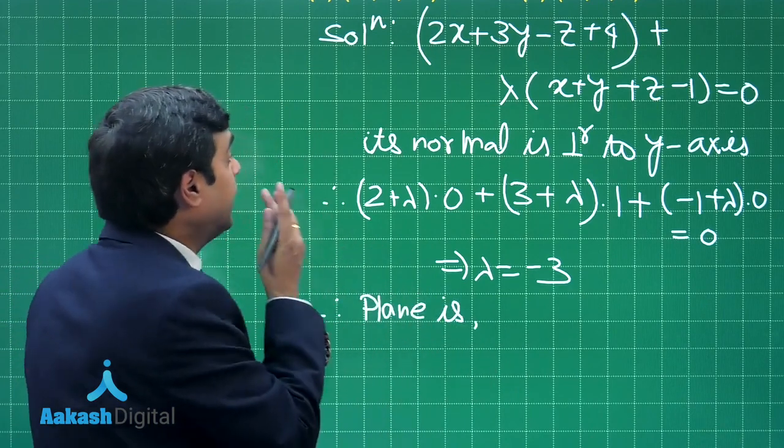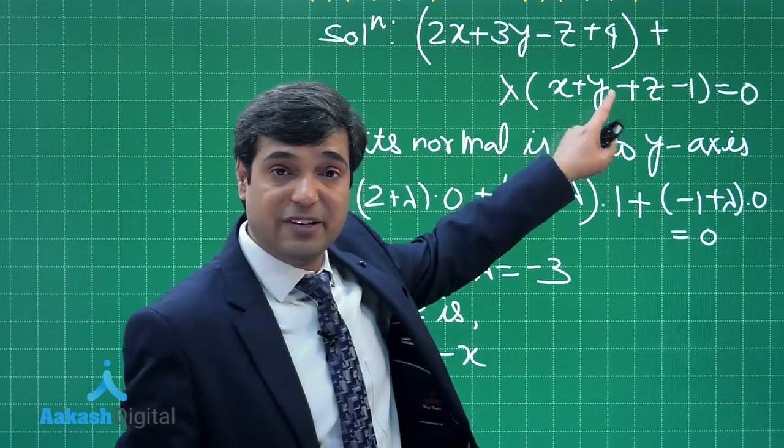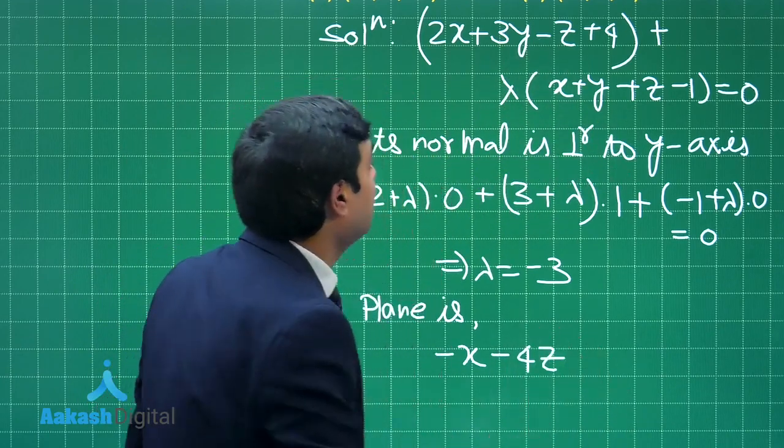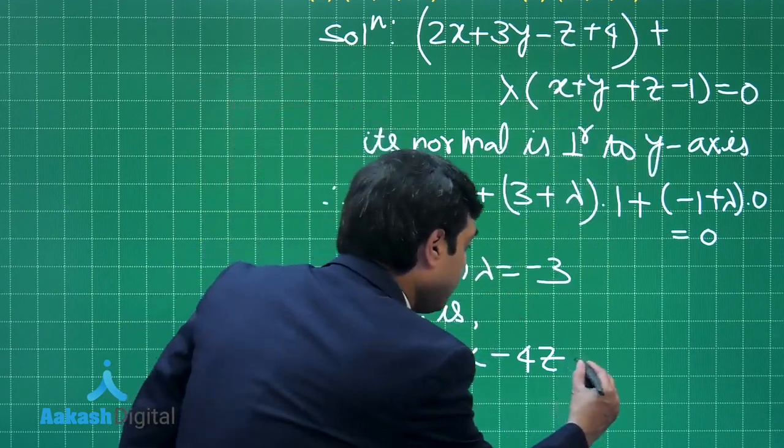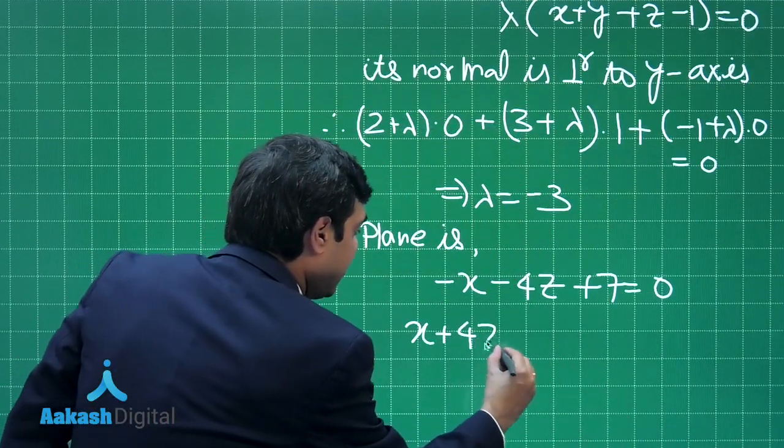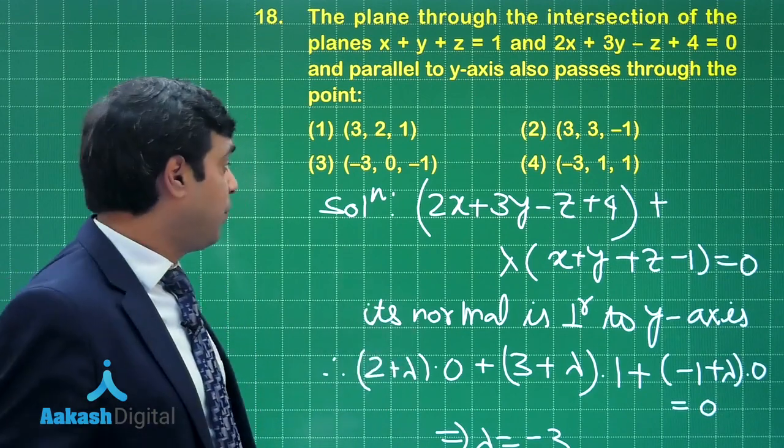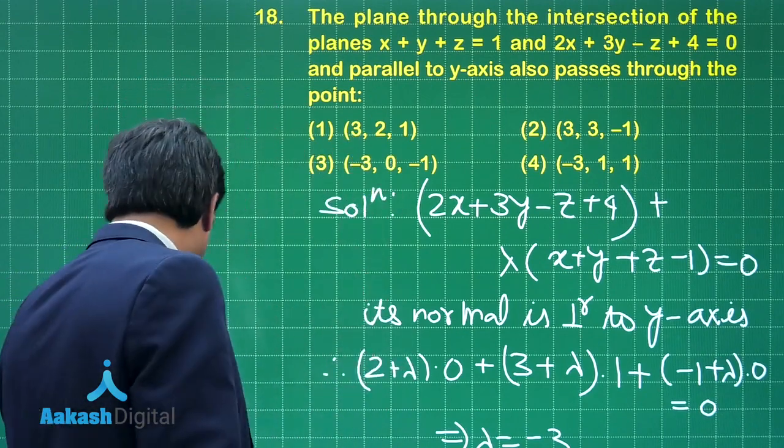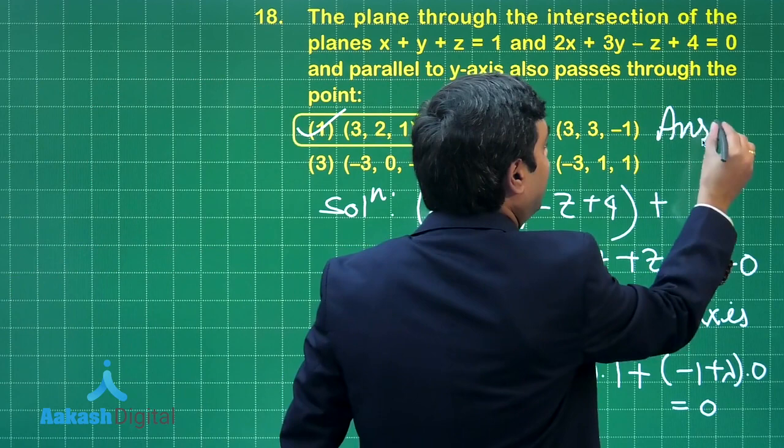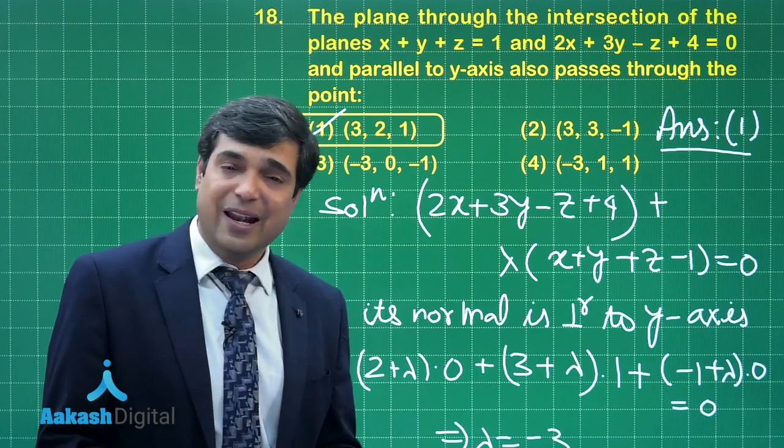Therefore, the plane equation: substituting λ=-3, we get 2x-3x, 3y-3y cancelled, -z-3z making -4z, plus 4+3 giving plus 7 equals 0. We can rewrite it as x+4z=7. Now look at the given options. x+4z, y can be anything, but x and z are important. When you look at the given options, yes, option number 1 is satisfying this equation. The correct answer is (3,2,1) is satisfying it. I'm sure this is clear.